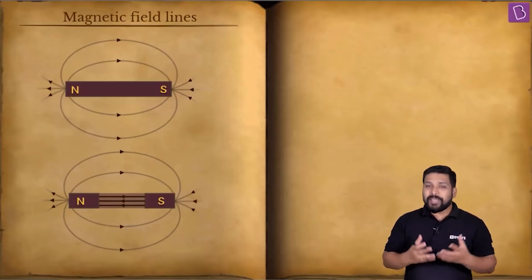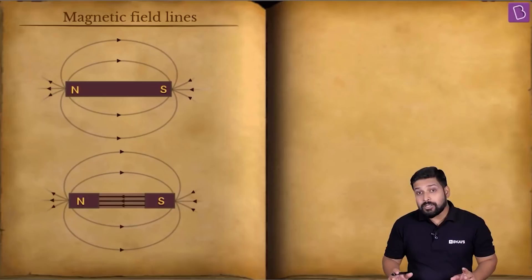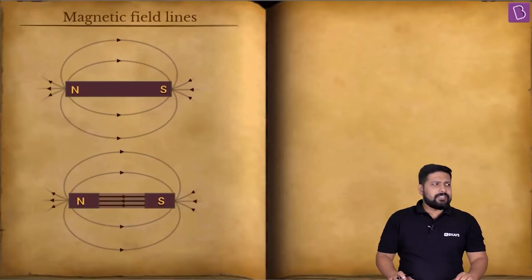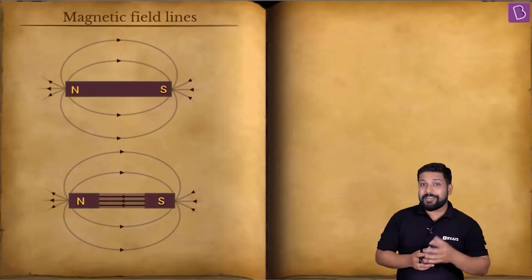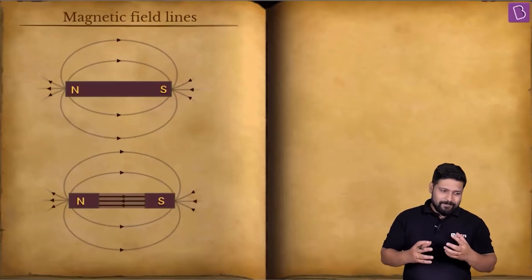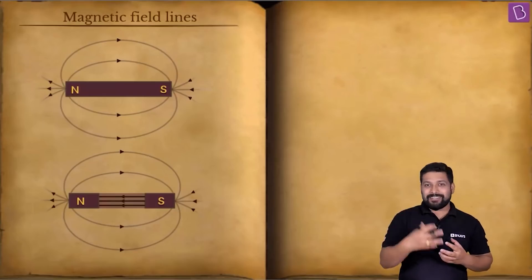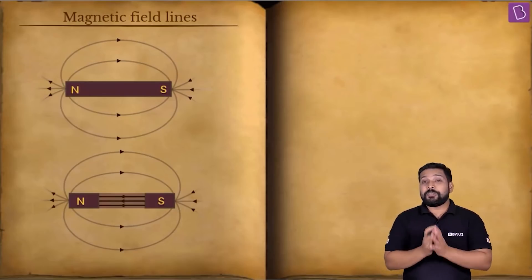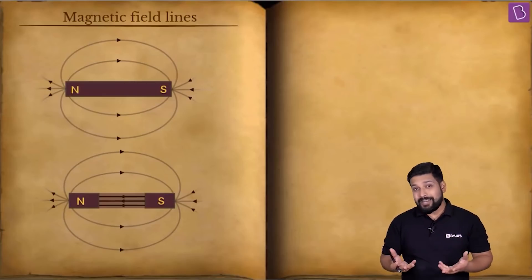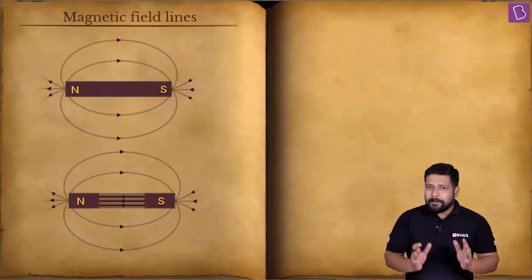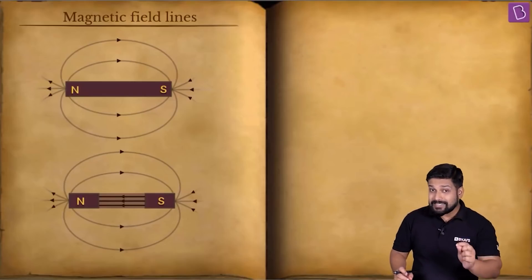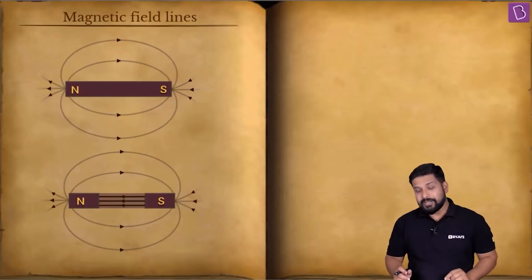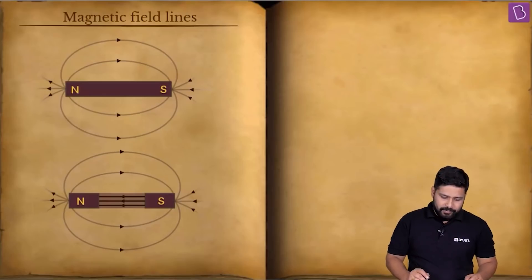There is certainly going to be an analogy, and if you understand that analogy — just by replacing certain terms from what you've already studied, and writing it in terms of magnetism — things are going to be super easy. You don't have to redo it again. But to start with the basic theoretical concepts on magnetism, we must first understand the magnetic field lines and their properties.